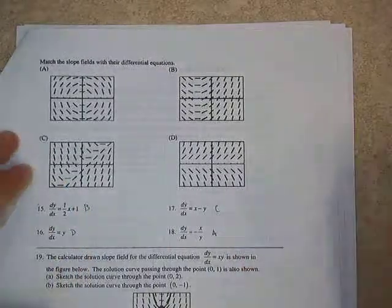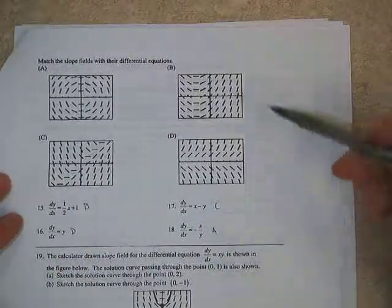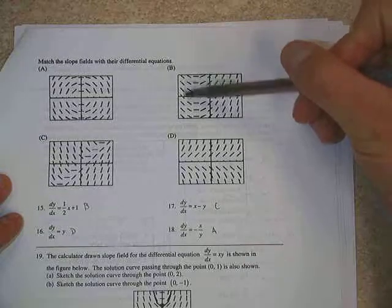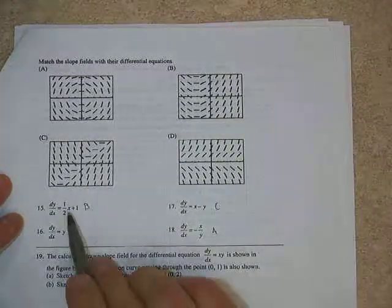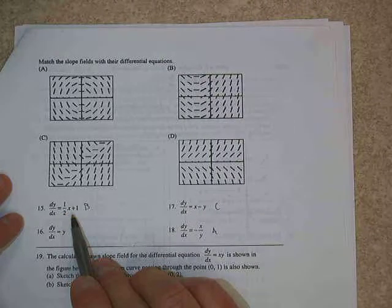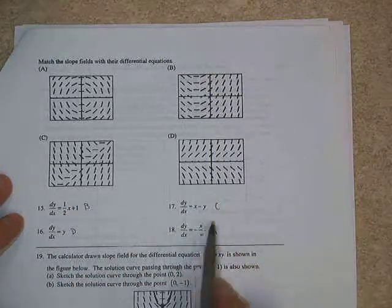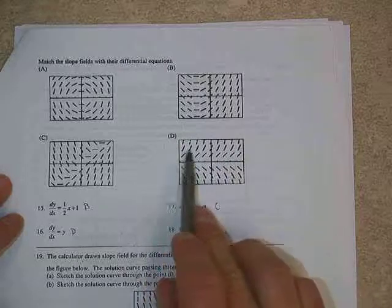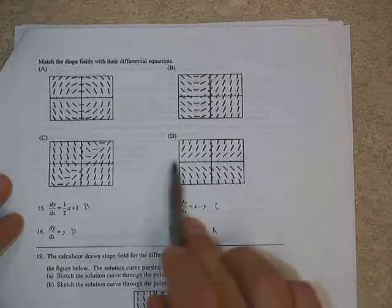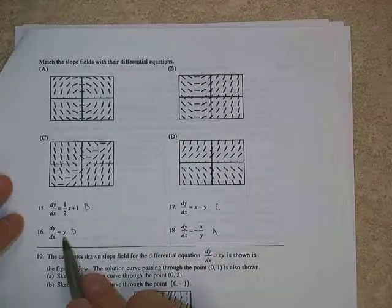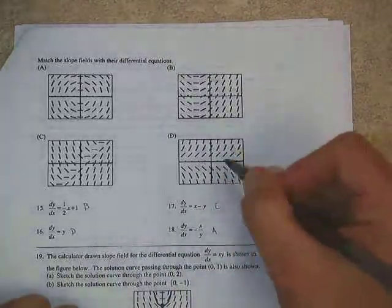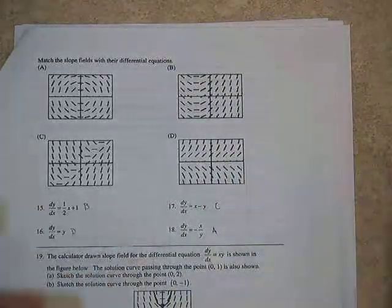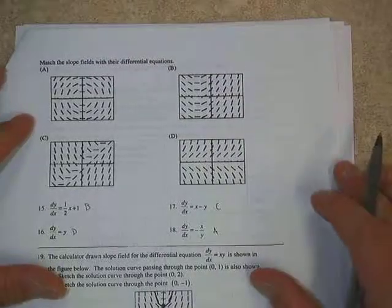One thing besides being able to draw a slope field is to be able to match like we did here. And again, you notice that when this one has got symmetry down the columns, all the columns have the exact same slopes. That's always going to be something that's just in terms of x. Likewise, when we have something that is in rows that are exactly the same, then that only depends on y. And ultimately, that would be choice D here, which would be dy/dx equals y. And so this would be our slope field for that.